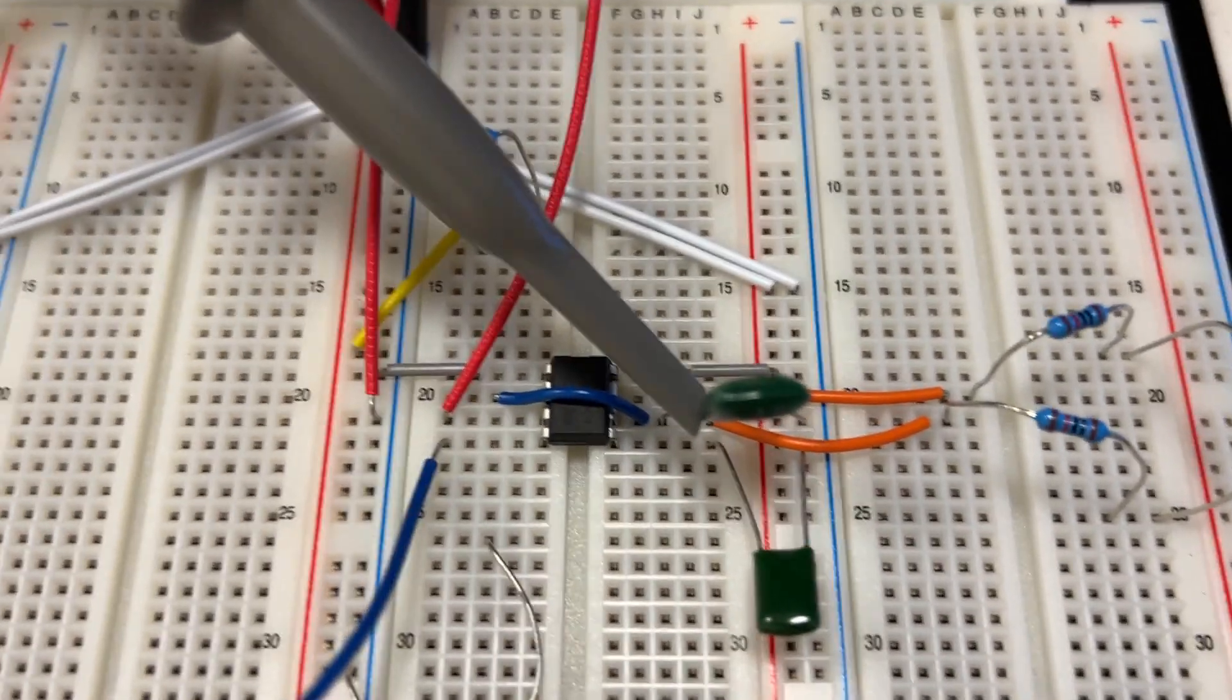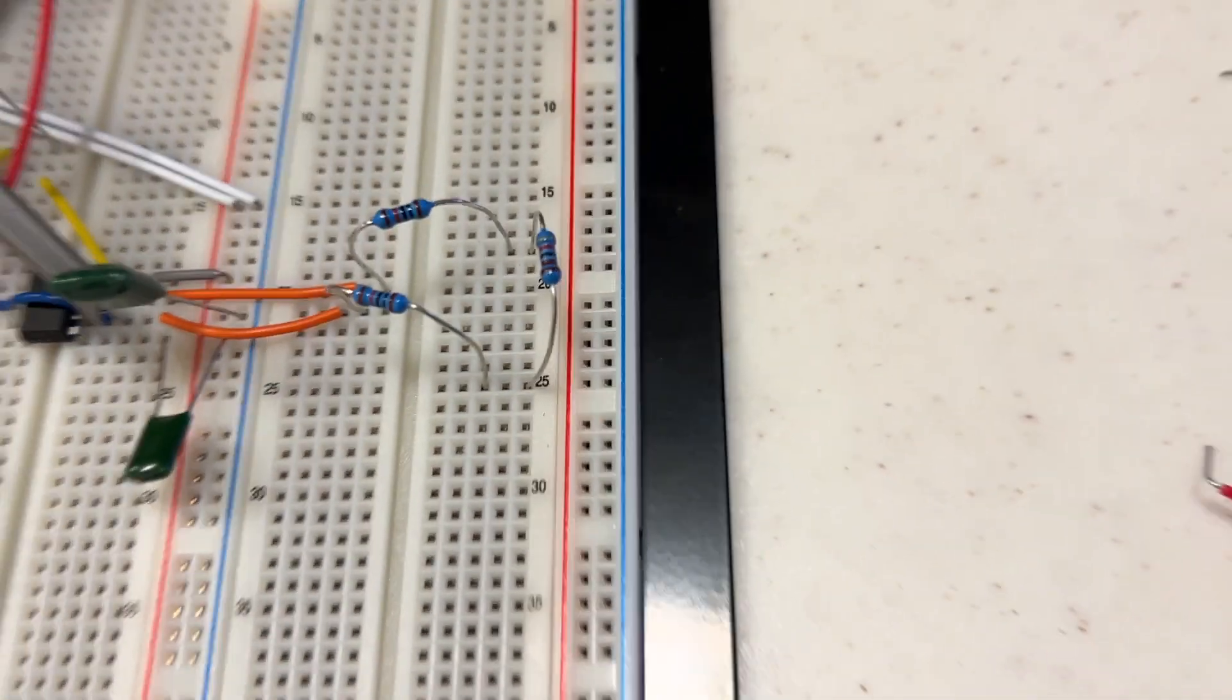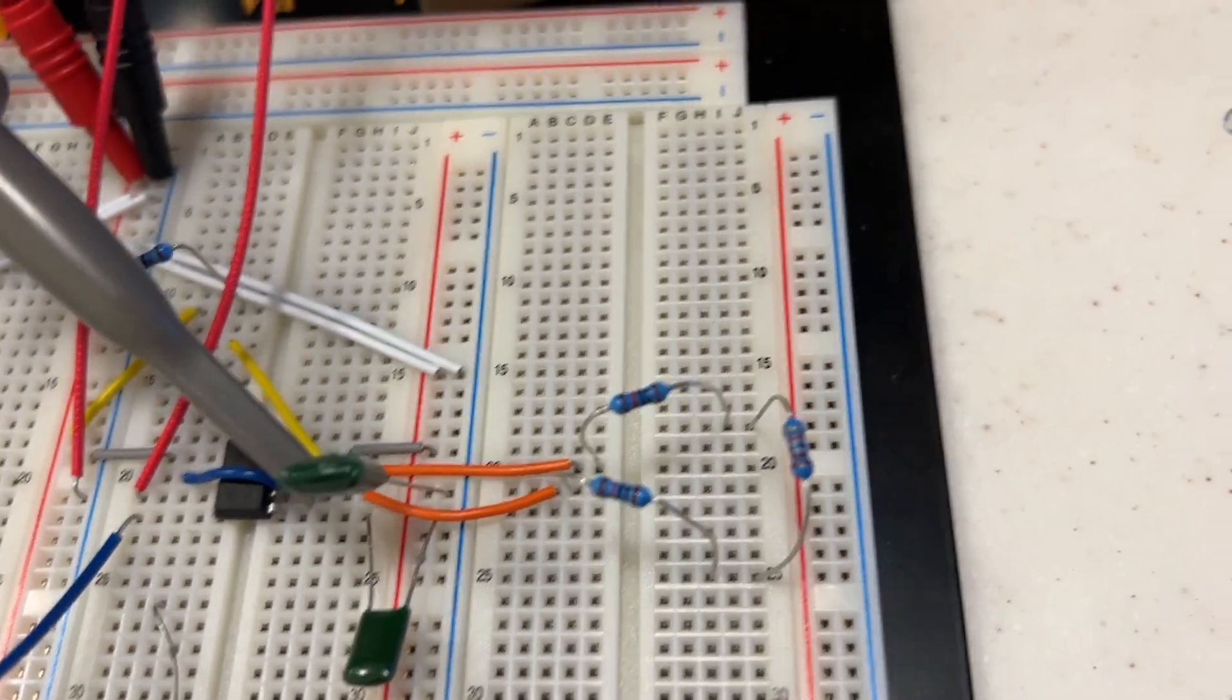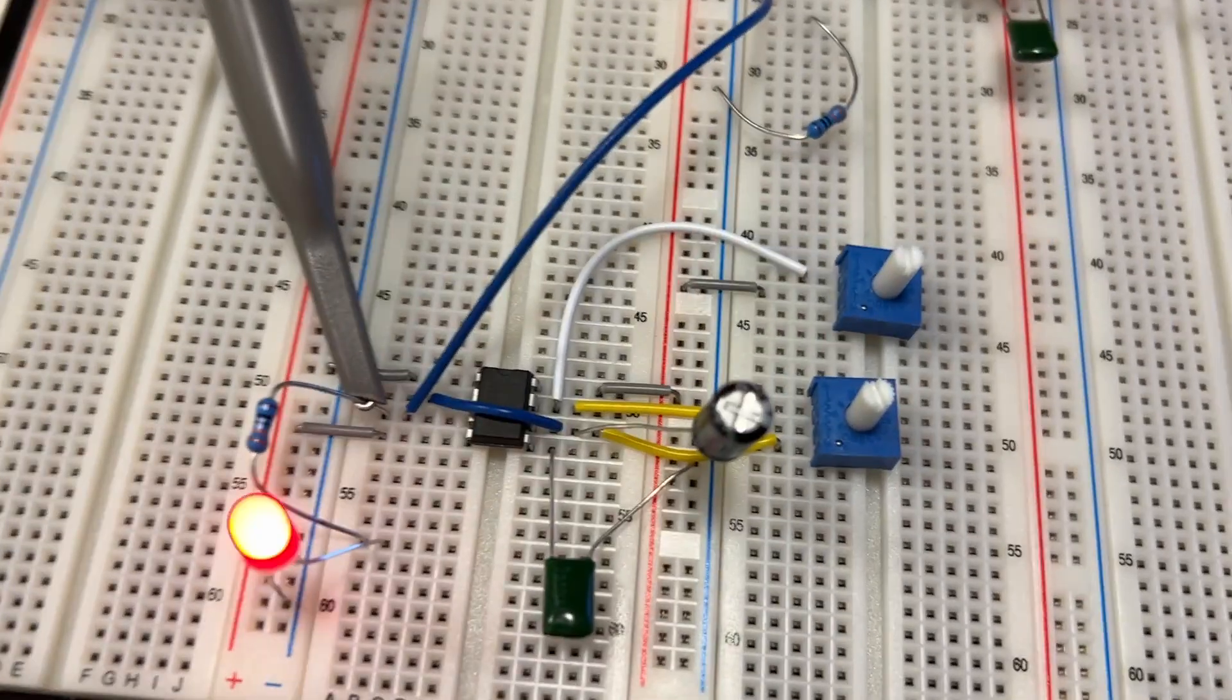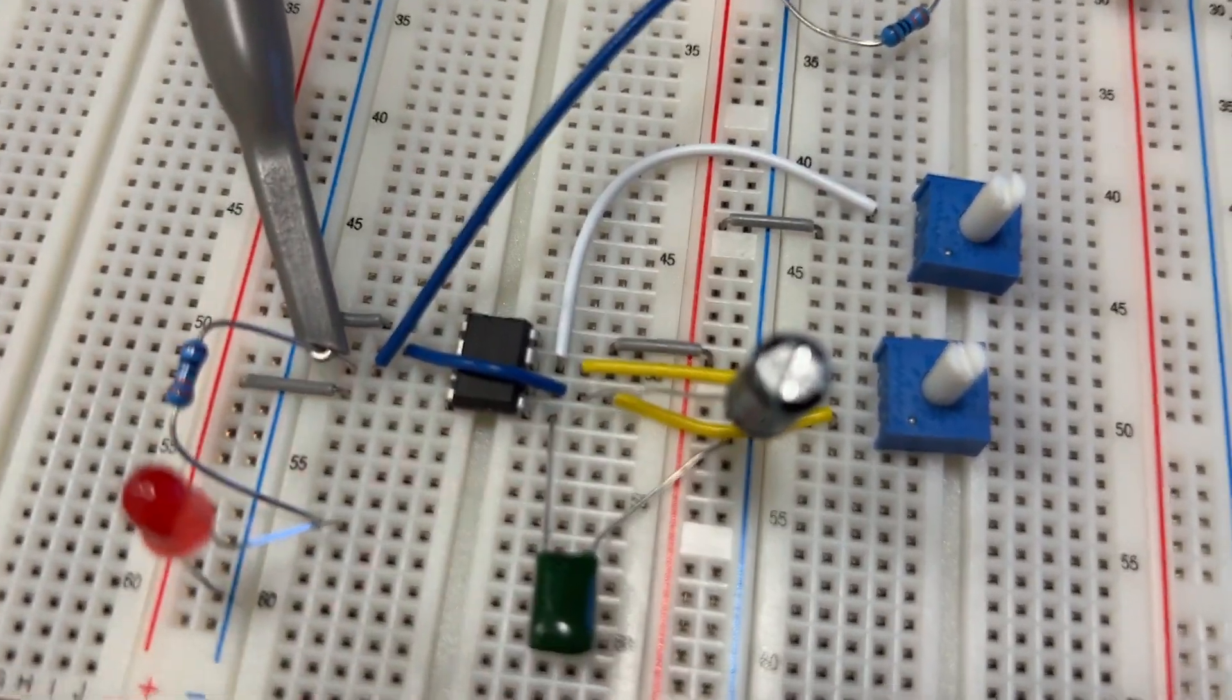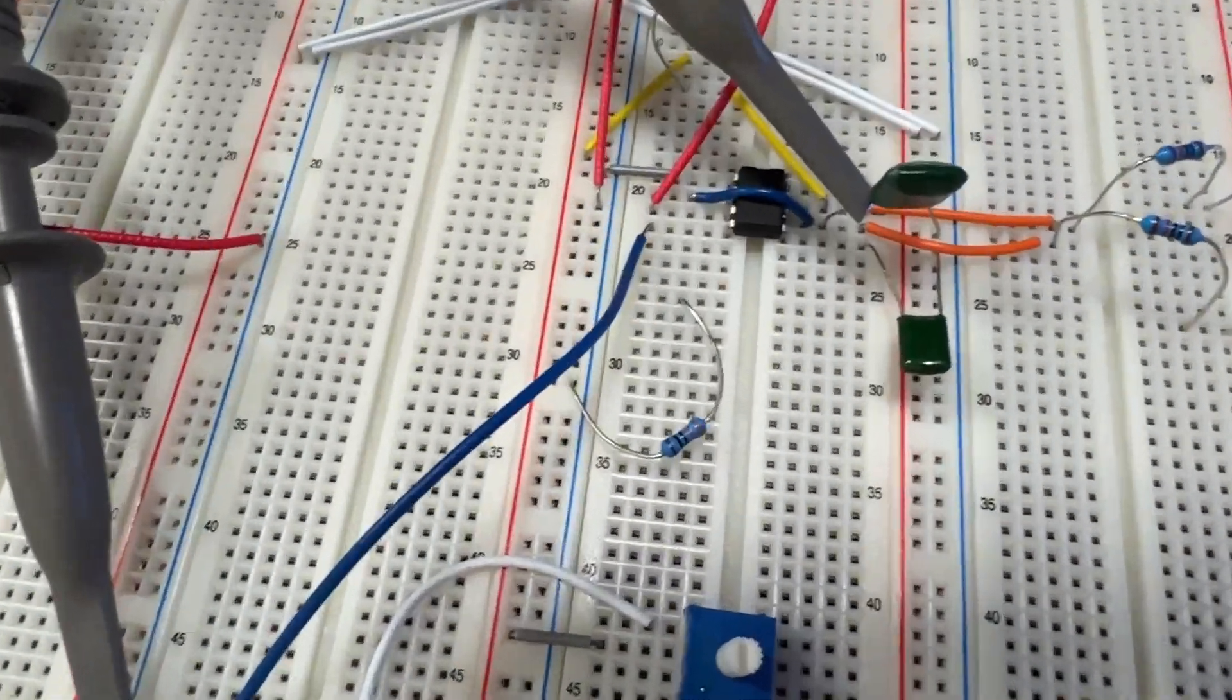So this tone is generated by the first astable 555 timer. We did the calculations shown in the lab report to generate the resistors and capacitors for this, and it's controlled by this second astable 555 timer where its output is connected to the reset pin here, this last pin.